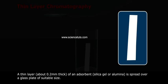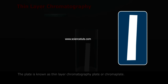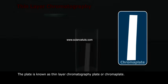A thin layer, about 0.2 mm thick, of an adsorbent silica gel or alumina, is spread over a glass plate of suitable size. The plate is known as thin layer chromatography plate, or chroma plate.